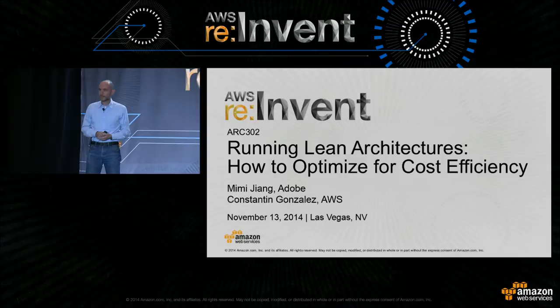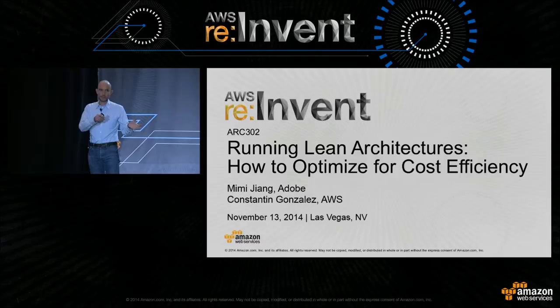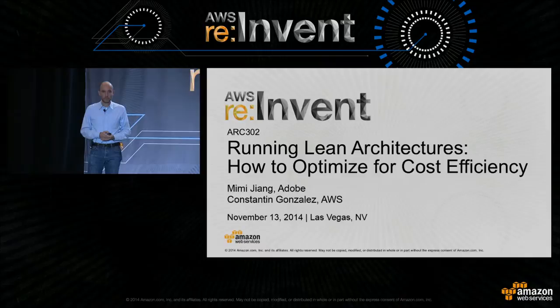My name is Konstantin Gonzalez. I'm a solutions architect with AWS in Munich, Germany. In my day-to-day job, I work with customers, putting together their architectures, helping them with architecture patterns, and also helping them save money on AWS.